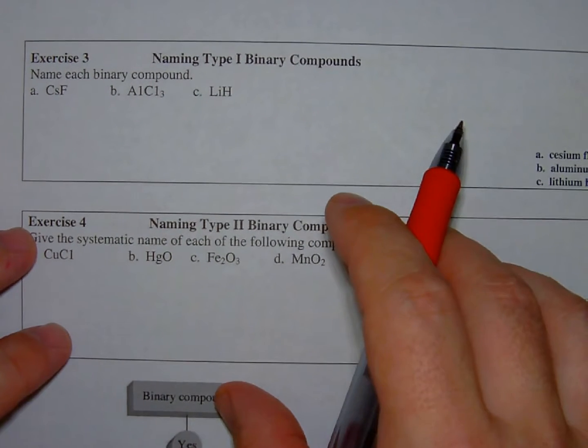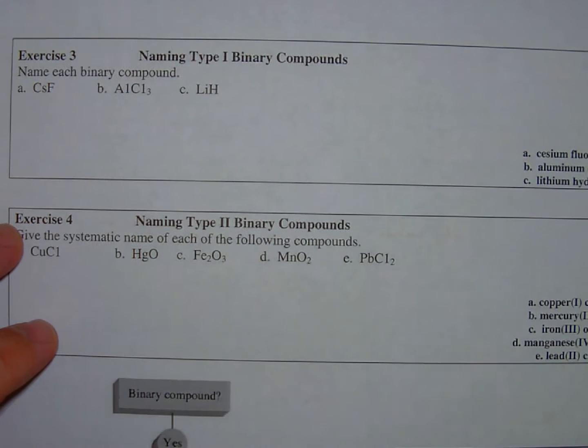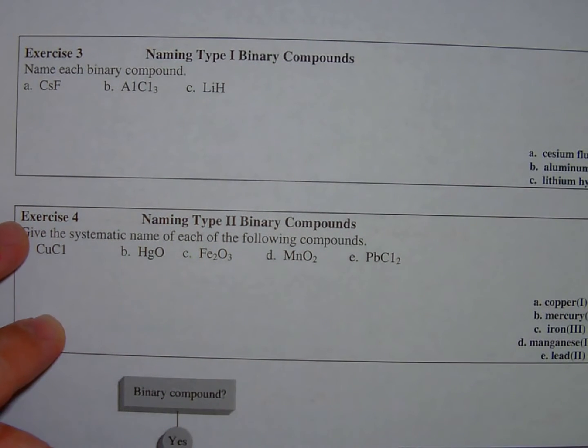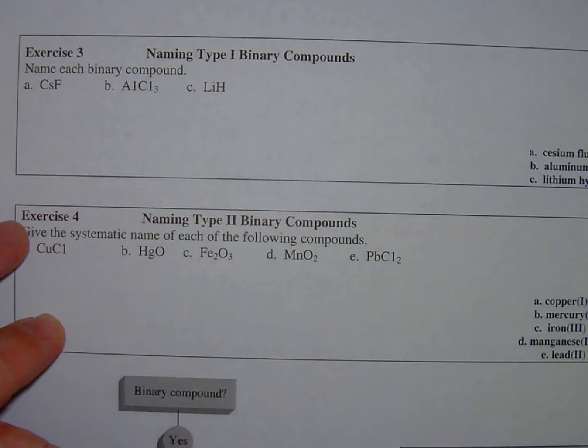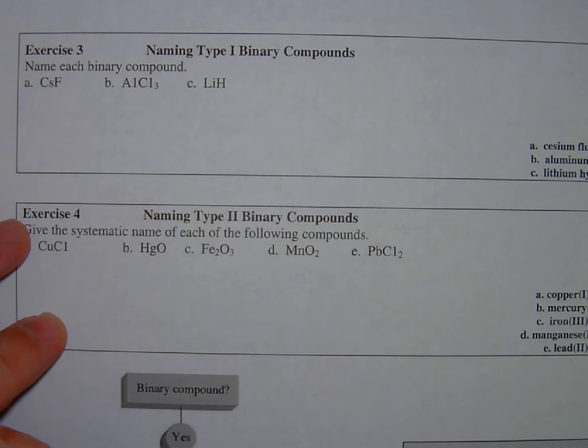Moving right along to exercise three, we're just going to start naming type 1 binary compounds. A type 1 binary compound is going to be a representative metal with a non-metal, from groups 1A or 2A, the main group metals over there.